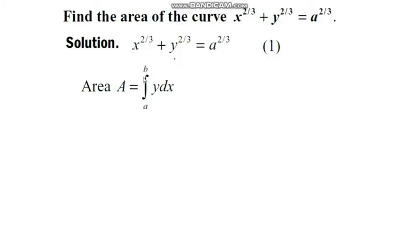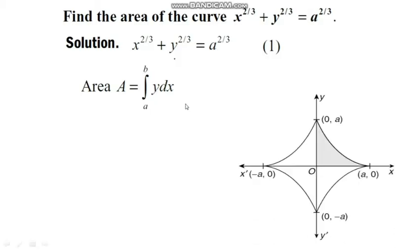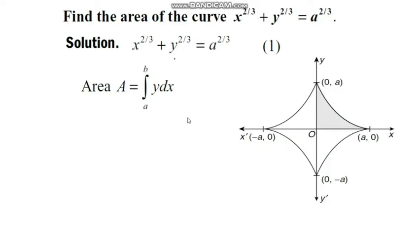According to the area bounded by the curve, we have the formula: Area A equals integral from a to b of y dx. The graph of the astroid curve is symmetric with respect to both axes. The points of intersection with the x-axis are (−a, 0) and (a, 0), and with the y-axis are (0, a) and (0, −a).